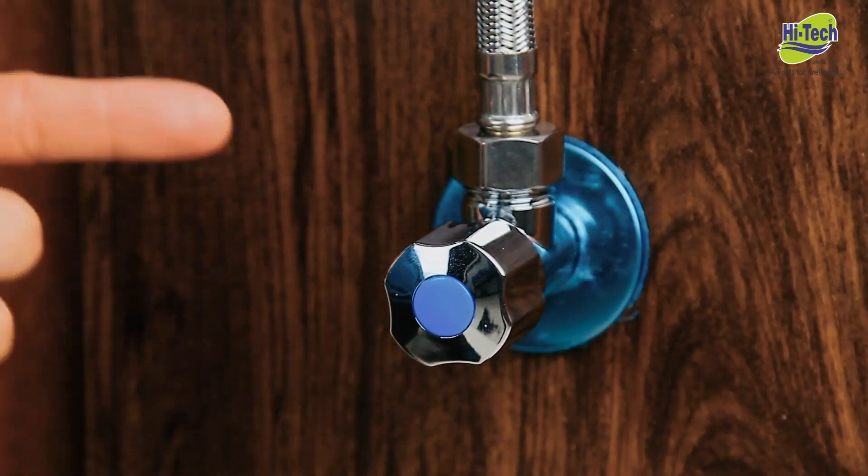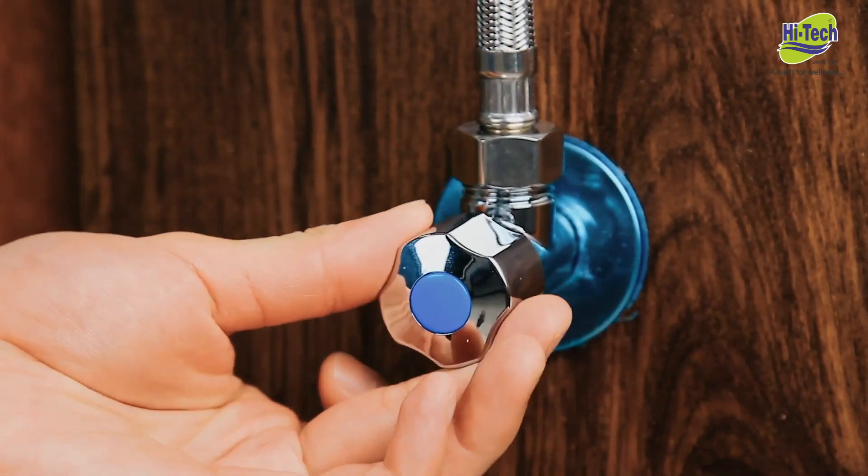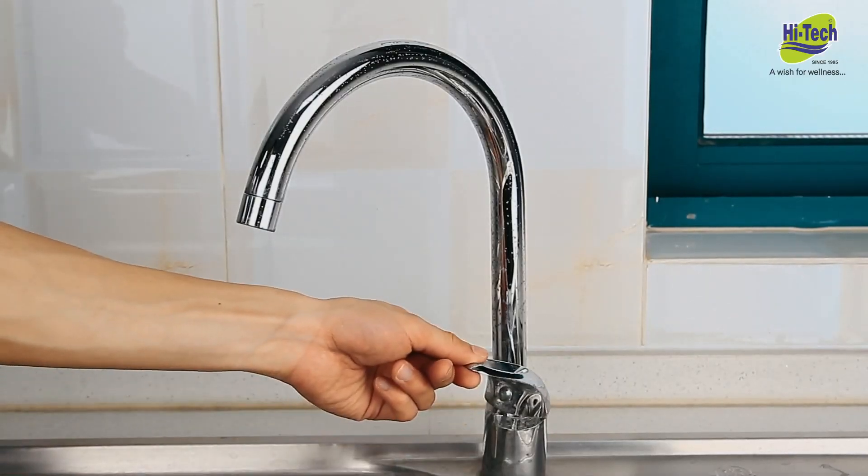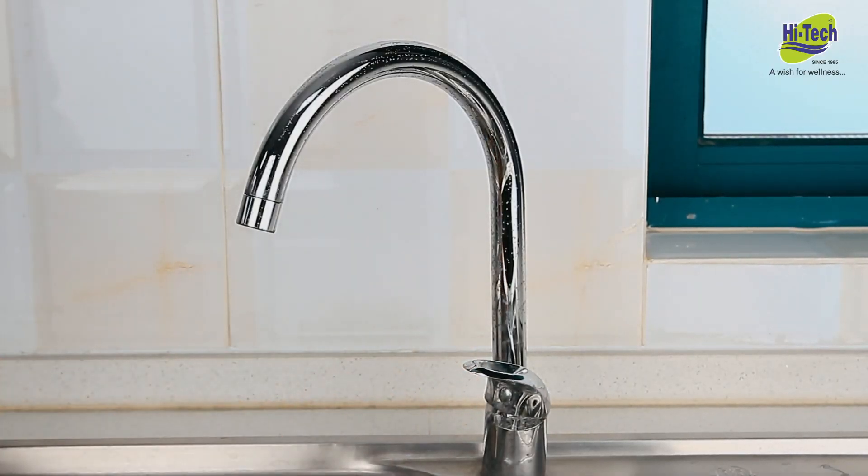We will begin with the setup of feed water tubing. Close the water supply valve, then turn on the kitchen faucet to release water pressure. Make sure no water is coming out before moving on to the next step.